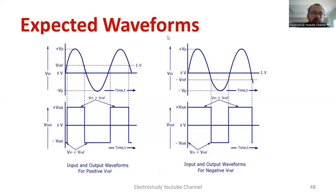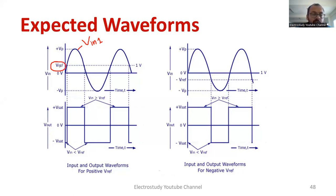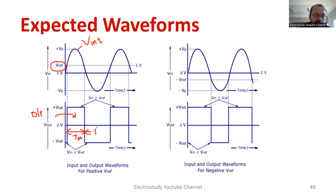Now let us see the waveforms. This is your sinusoidal waveform VIN1. We are not changing anything for the sinusoidal waveform — it is fixed at 10 volt peak-to-peak at 1 kilohertz. What we are going to change is the reference voltage, varying it from 1 volt to minus 1 volt. With respect to the change in reference voltage, the output — which is the expected comparator output — will change. In that output we have to measure the duty cycle. This is your on period T_on, this is the off period T_off, and this is your total time period T.